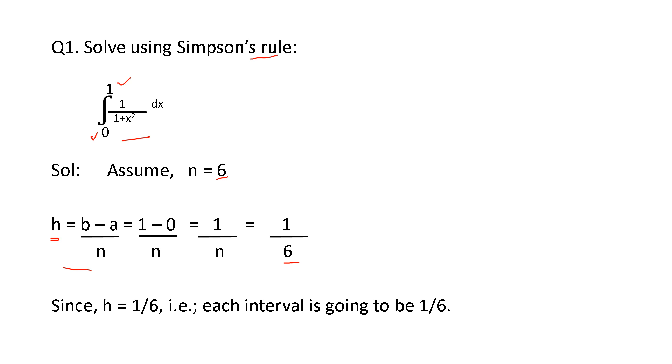h determines the interval between the x values. x value, the starting is 0 and the last is 1. That is the ranging values. Integration ranging values, 0 to 1. That means the starting is 0 and it should end with 1. In between them, you have to break it. For breaking that range, we are using this h value. That is each interval is 1 by 6.